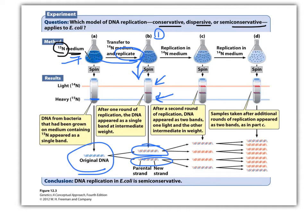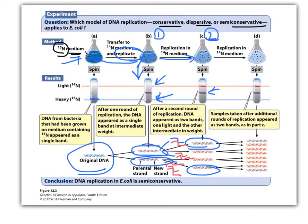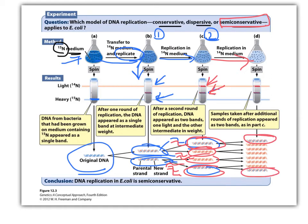Then, if we do one more round of replication, we still see this intermediate band — because the old strand split and each got a new strand. So one molecule has old and new (blue and red), another has old and new, and then each of those old strands gets a new N14 strand. What we see is the intermediate band plus two light bands, with the red meaning the N14-filled DNA. We always see this intermediate because the original template strand still exists — it doesn't go away. This supports semi-conservative replication.